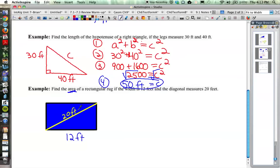Find the area. Well, in order to find the area of a rectangle, we know that we have to multiply base times height. Well, we've got the base. We don't have the height. But we can use the Pythagorean theorem to figure out what that height is. So a squared plus b squared is equal to c squared.